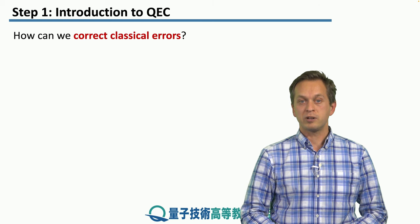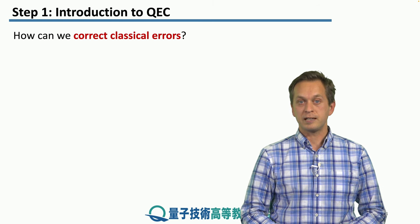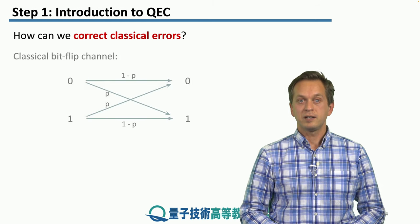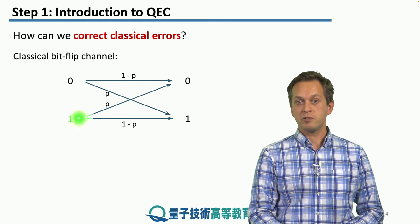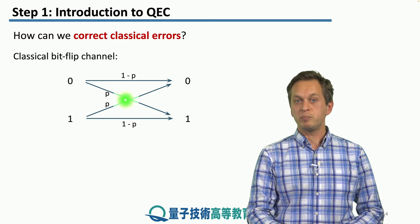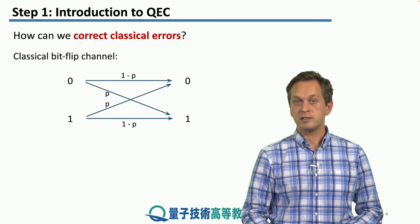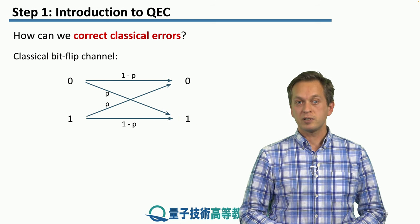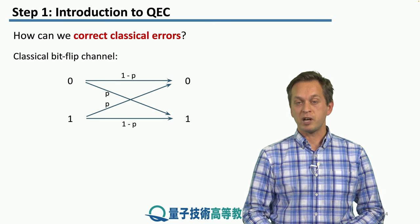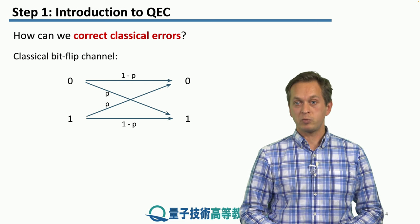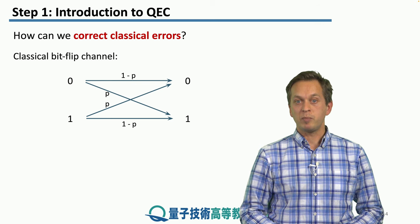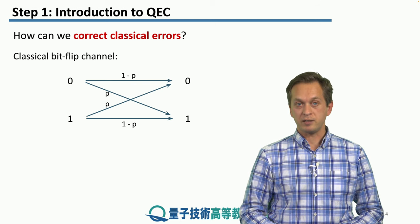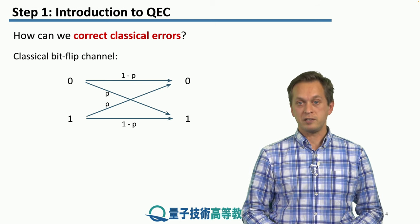So how does error correction work in classical communication? Let's say we are trying to communicate a single bit — either a zero or a one. With some probability p, when it passes through the channel, it flips its value: a zero can become a one or a one can become a zero with probability p. With probability one minus p it remains unaffected, so a zero stays a zero and a one stays a one.